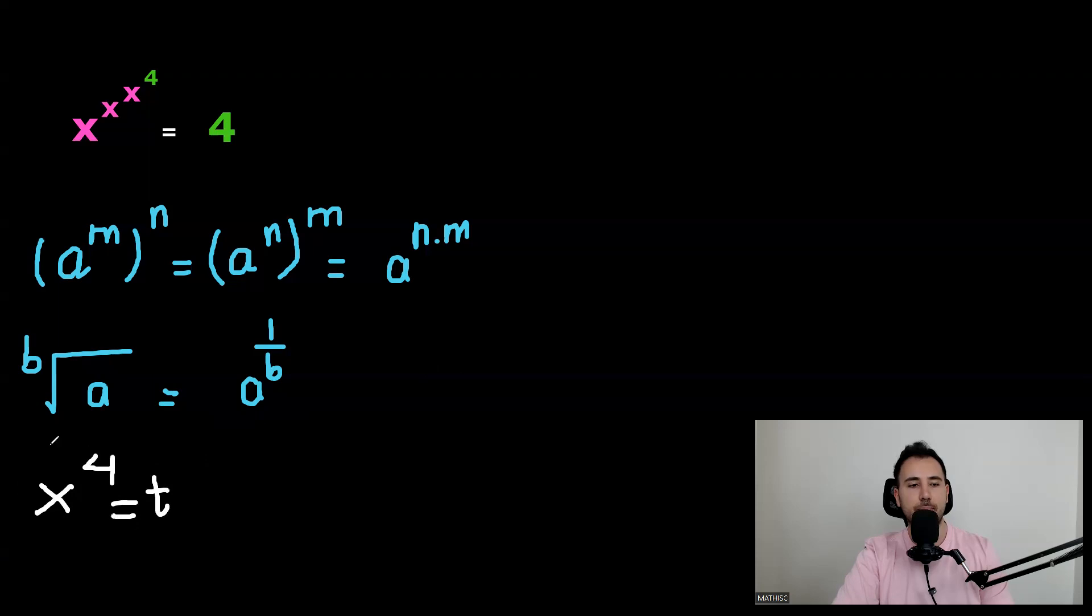When we do this, this side will be X equals, remember fourth root of T, right? Fourth root of T. But I'm not going to write it in this form. I'm going to write it in this form. So it will be T to power of one over four.